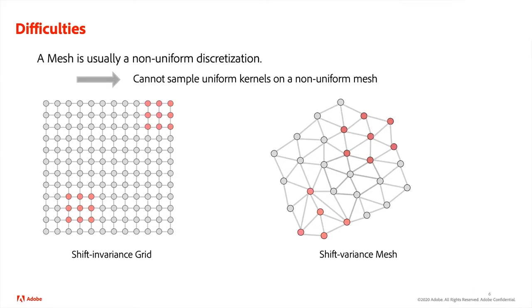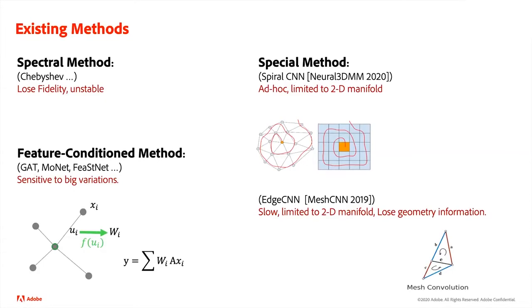So why don't we have a good CNN network on meshes? There are a lot of difficulties. In traditional CNN, the grid is a regular uniform grid, which means at each local patch the structure is the same. However, on the mesh, each local patch has different topology, connectivity, and density. It might even rotate on the whole 3D mesh. So it's really hard to define a uniform kernel on a non-uniform mesh.